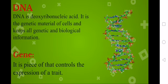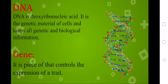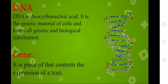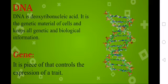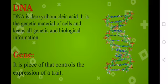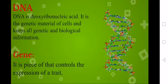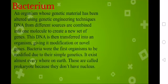DNA is the genetic material of cells, in which we have genetic and biological information. It controls the expression of a gene — that is, it controls traits. Traits means characteristics of the human body, such as being happy or sad — DNA controls these expressions.